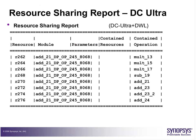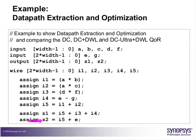Now let us see how DC will extract the data path. You do not have to do anything special — you just analyze this RTL, elaborate, apply your constraints and do a compile. After compile data is done, you just do a report resources. A similar example is discussed in the lab where we see the report resources report.